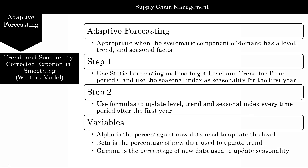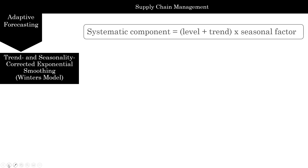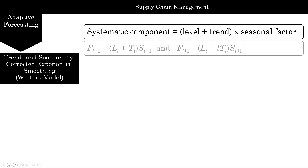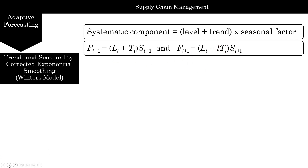Looking at the formulas for trend-corrected exponential smoothing with seasonality: the forecast for the current time period uses the previous period's level plus trend, multiplied by the current seasonality. If we have more time periods than the dataset, we multiply the trend by the corresponding number of periods.